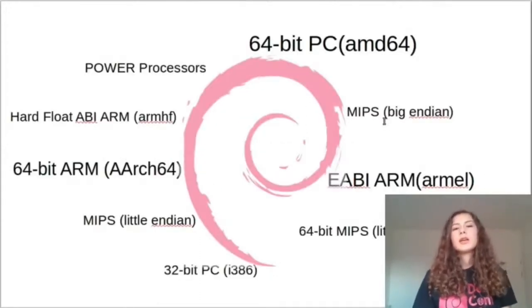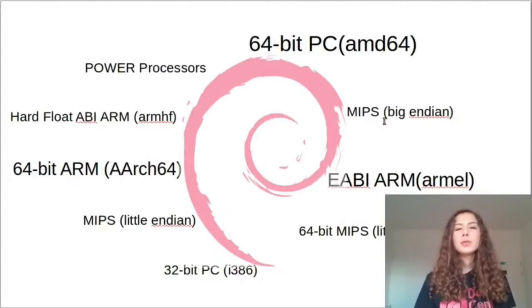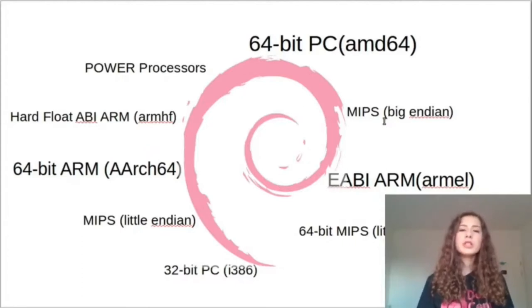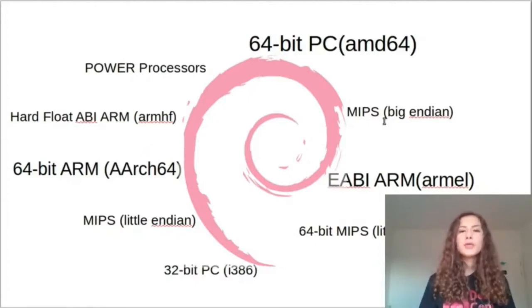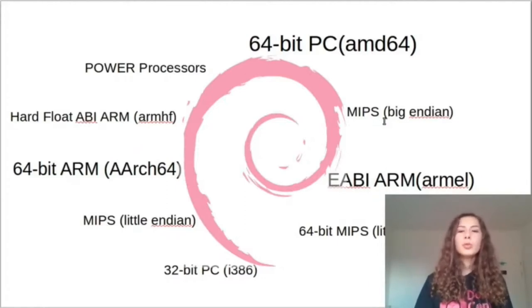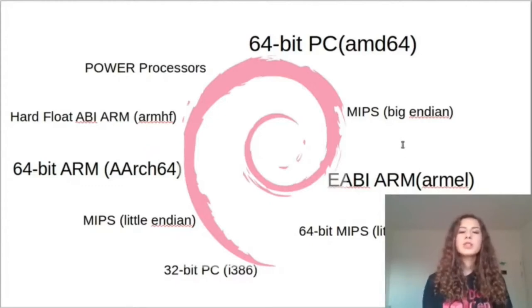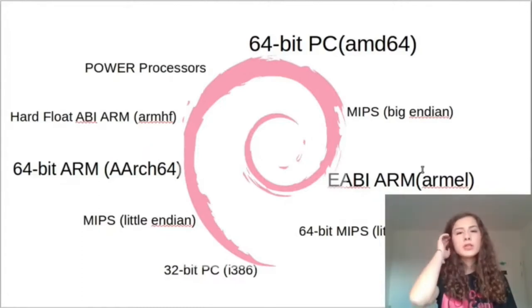Debian will run on almost anything. Each new release of Debian generally supports a large number of architectures. The current stable release, Debian Buster 10.5, supports these 10 architectures: 64-bit PC, 64-bit ARM, EABI ARM, hard float ABI ARM, 32-bit PC, MIPS Big Endian, MIPS Little Endian, 64-bit MIPS Little Endian, Power Processor, and IBM System Z. And there are other ports with non-official installation images, like RISC-V, SPARC, Intel Itanium, SuperH, and others.